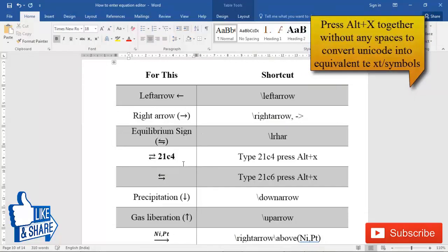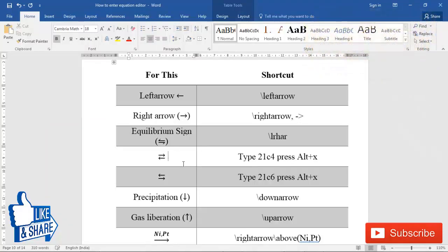21c4, just for typing this press alt+x and it will convert into this kind of symbol. This is a unicode of that, and for converting unicode number into actual symbol, just press alt and x together.